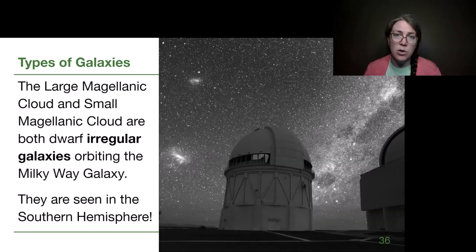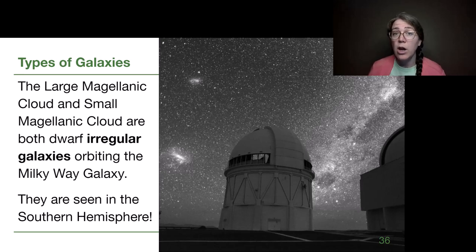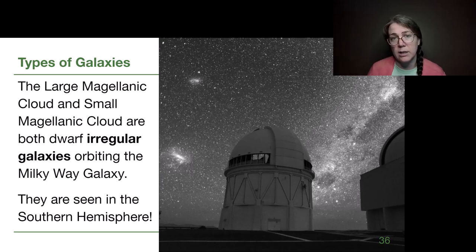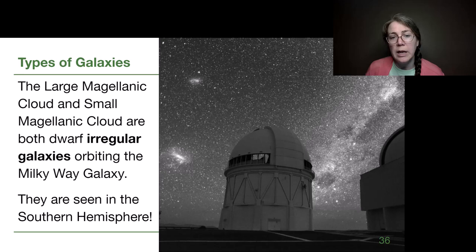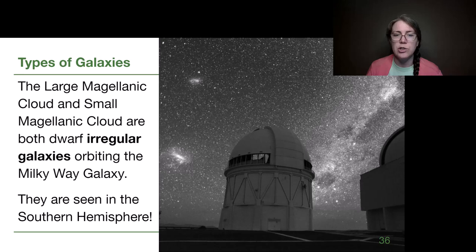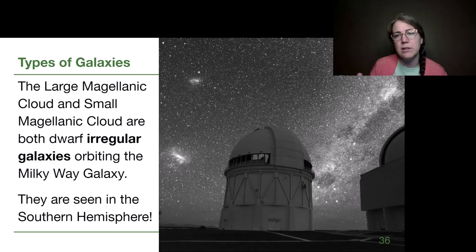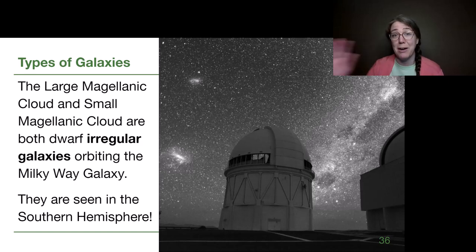Those two main categories can't capture everything. The Large Magellanic Cloud and Small Magellanic Cloud are both dwarf irregular galaxies that orbit the Milky Way — they are outside the halo and are their own entities. They contain fewer stars than a typical galaxy, which is why they're called dwarf, and they seem to have some gas and dust, which makes them not really fit the elliptical or spheroidal category. They're irregular — the kind of leftovers.